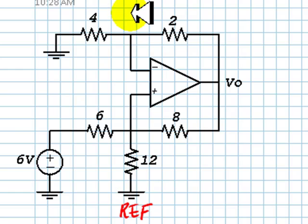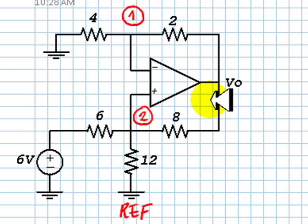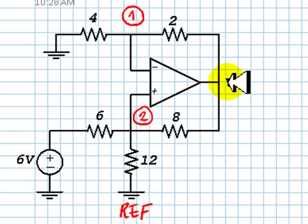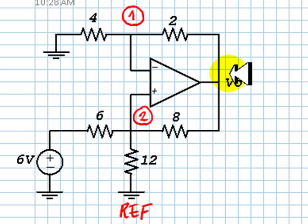There is one node here — I will call that Node 1. There is another node here — Node 2. And there is a third node here, the output node. But we were warned: do not write a KCL equation for the output node, so I will not write that as one of the nodes we are interested in.